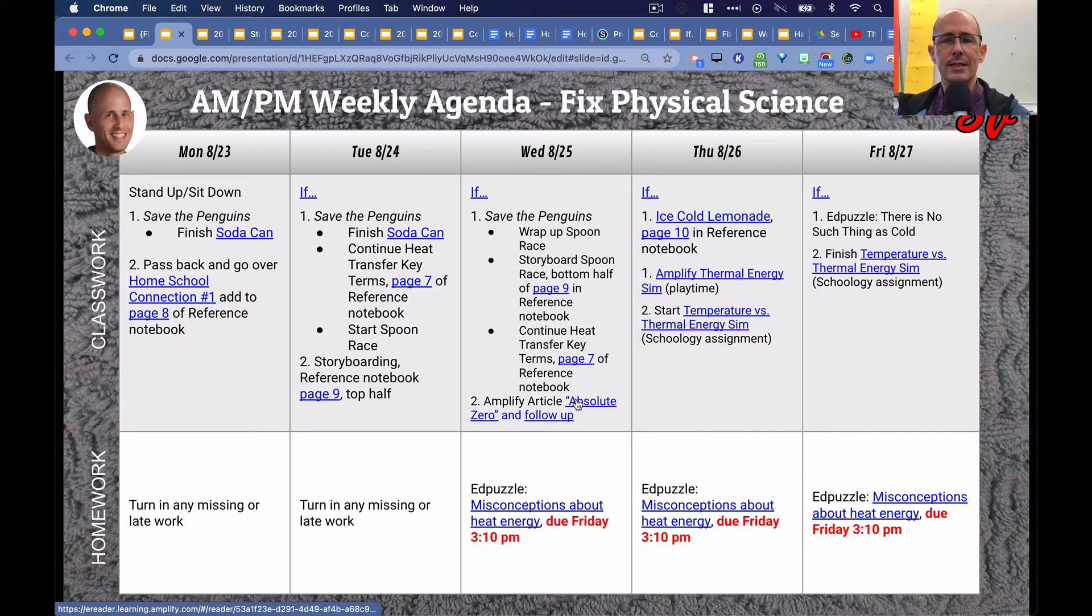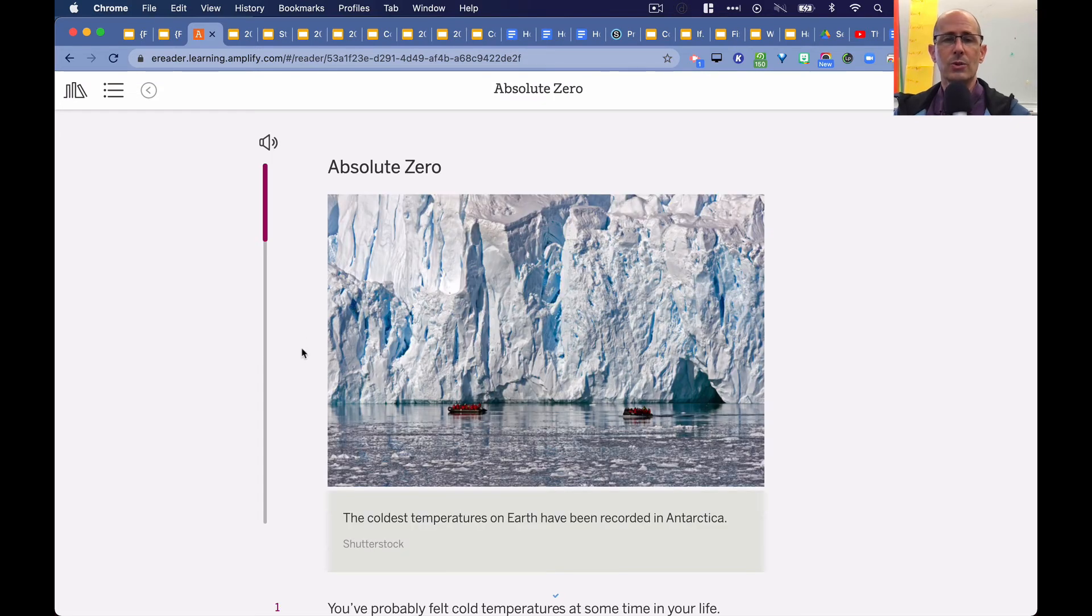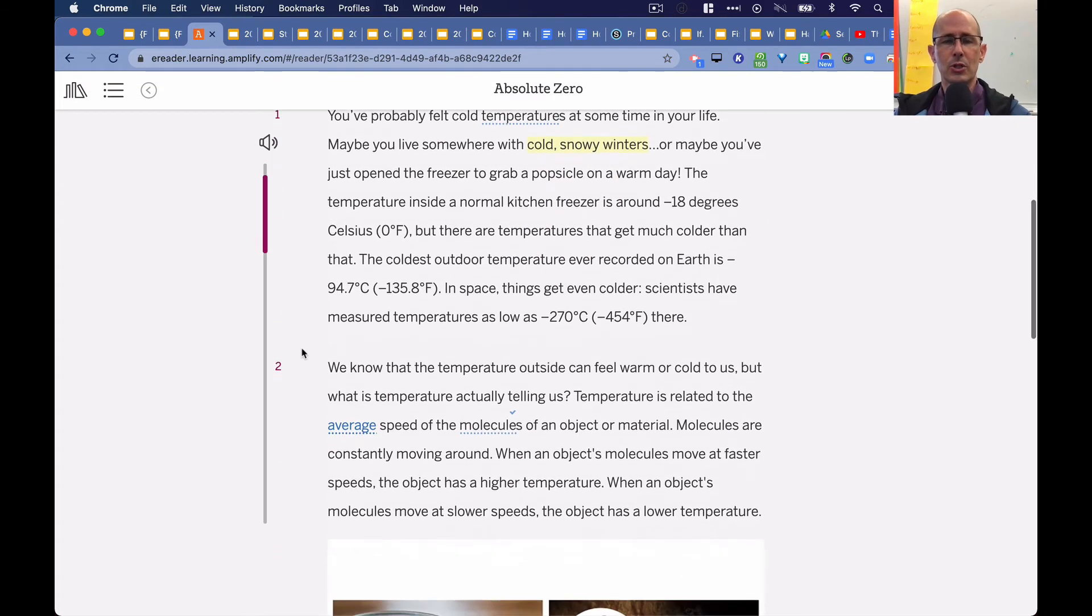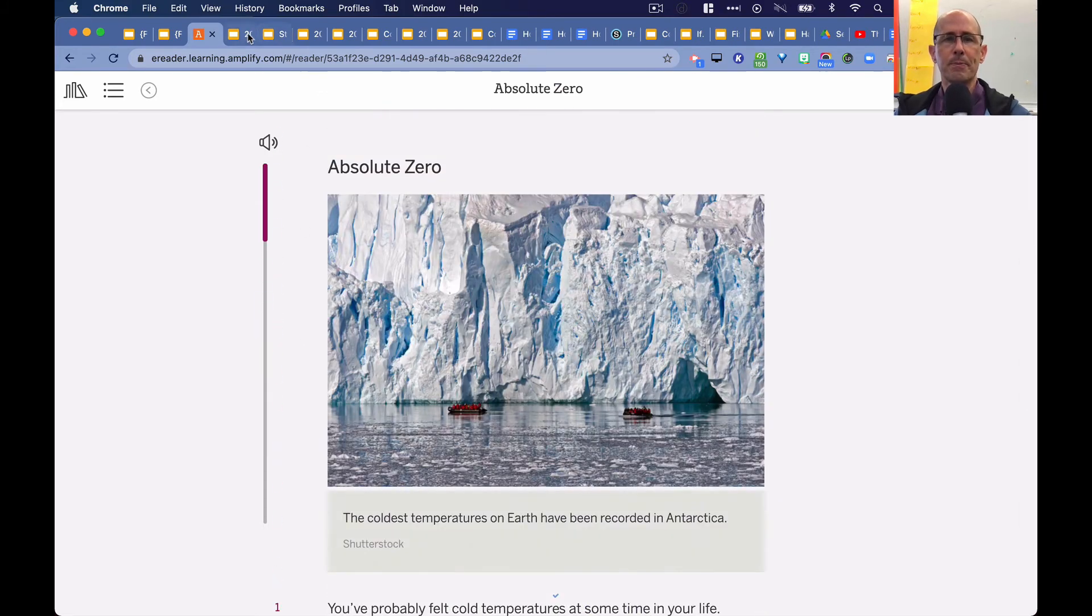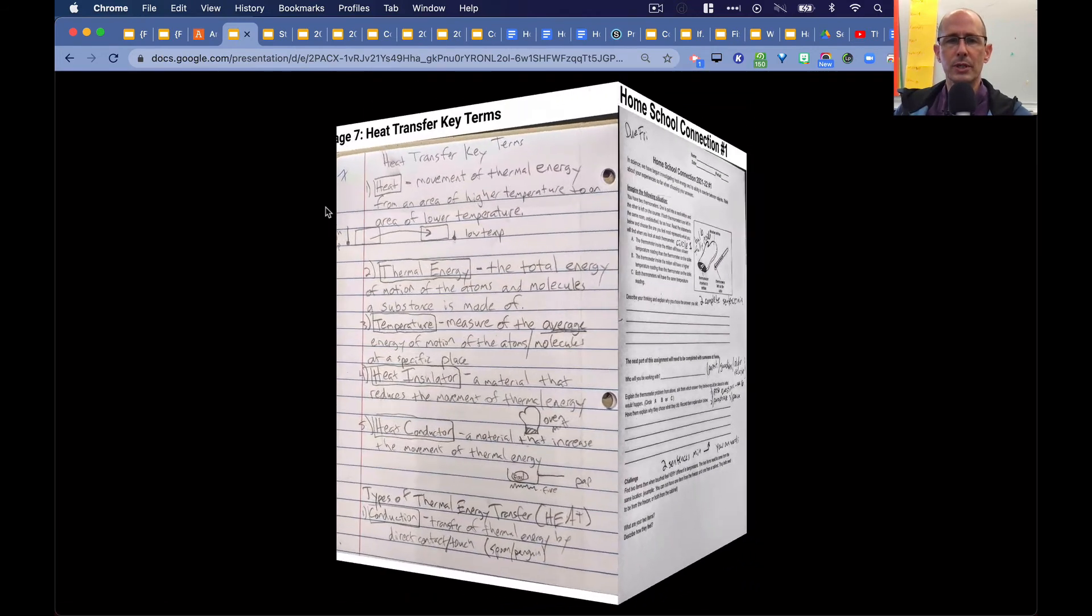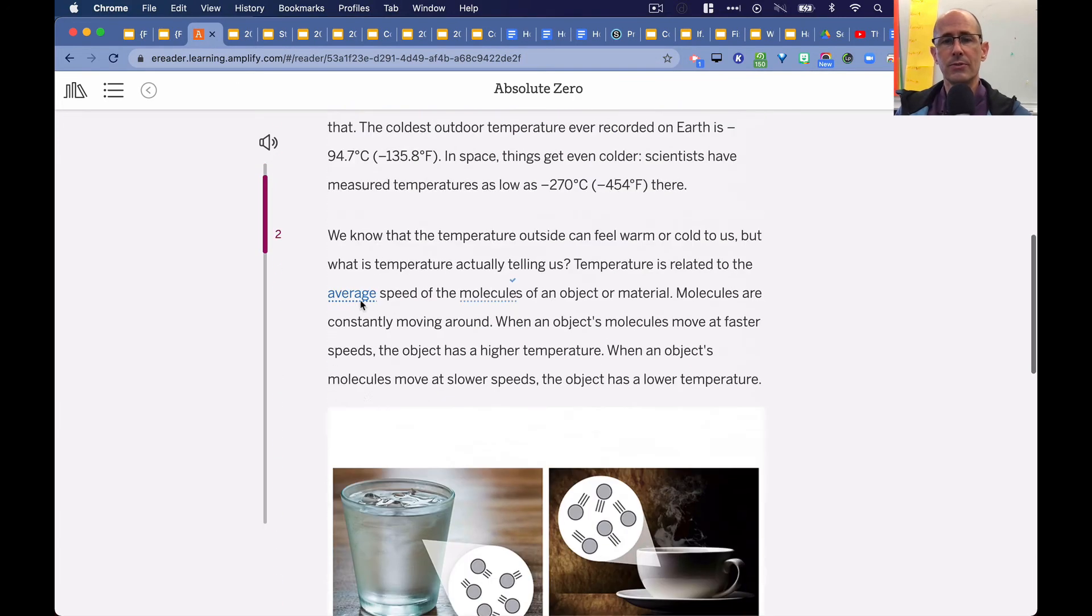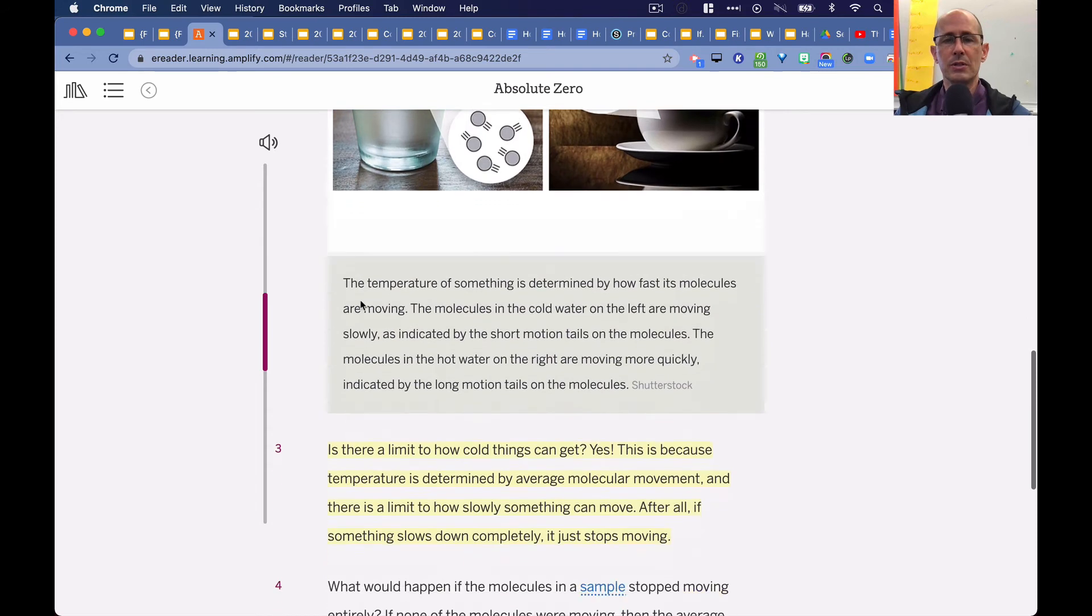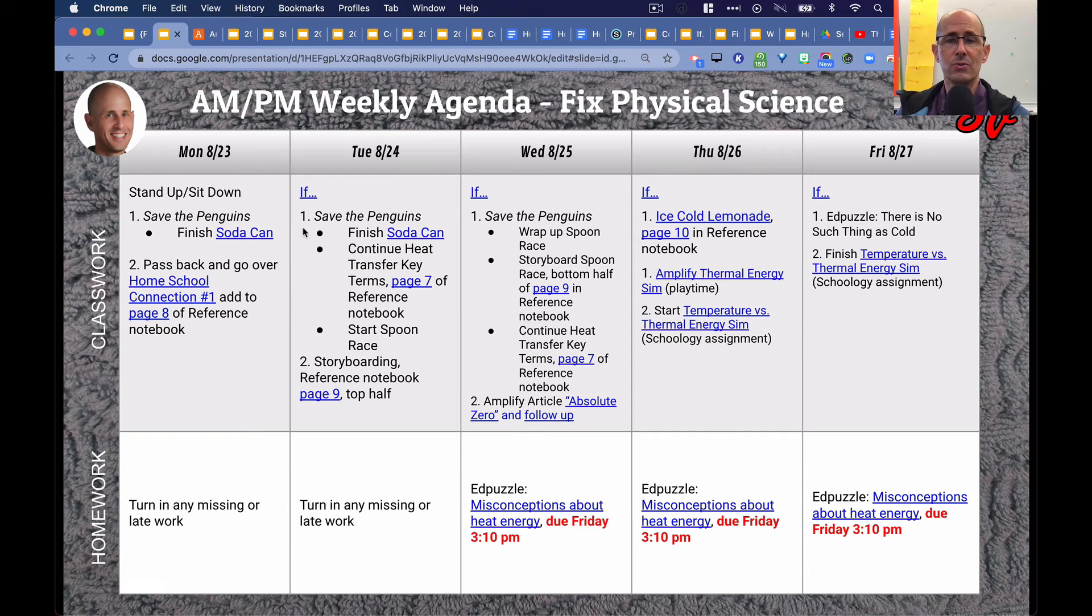We then took a look at an article from Amplify called Absolute Zero. So this article is from our online textbooks, which we have access to starting this week. So there's four paragraphs we read about temperature and molecule motion and absolute zero. This is tying back to our terminology of what temperature is. Temperature is a measure of the average energy and motion of atoms and molecules. And so the article was basically, if all molecular motion ceases, then you have zero molecular motion, therefore zero temperature. So that's absolute zero.